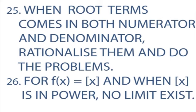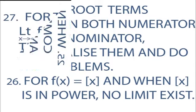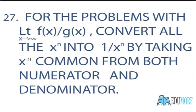Twenty-fifth, when root terms come in both the numerator and denominator, rationalize them and then do the problems. Twenty-sixth, for any function f(x) equal to the integer of x, when the integer of x is in power, then no limit exists. Twenty-seventh, for problems with limit f(x)/g(x), convert all x^n into 1/x^n by taking x^n common from both numerator and denominator, and then solve.